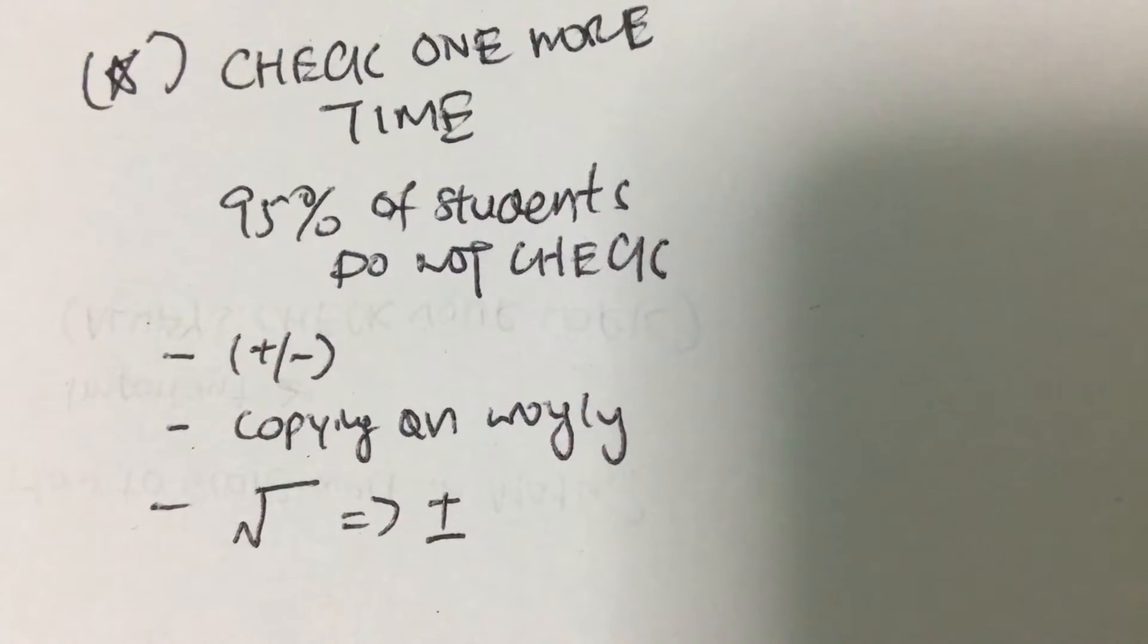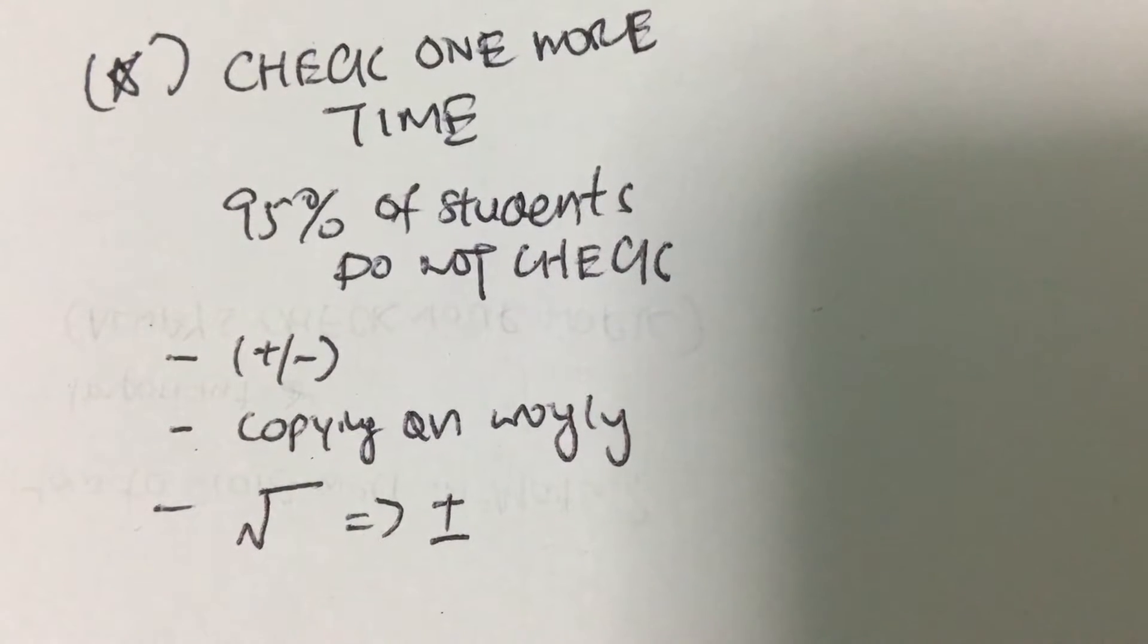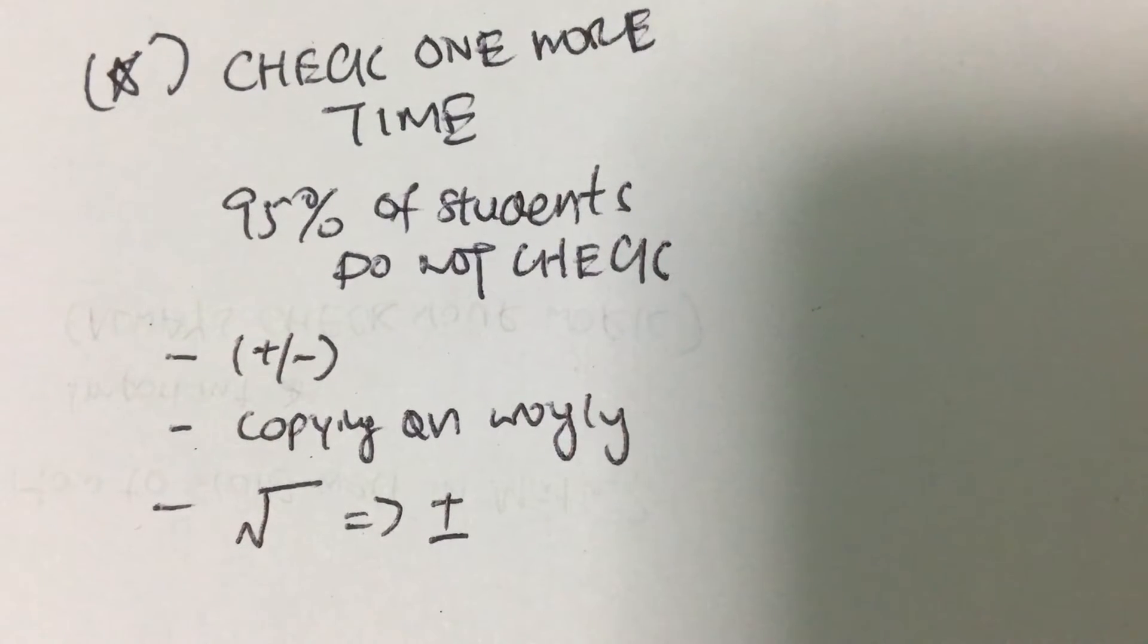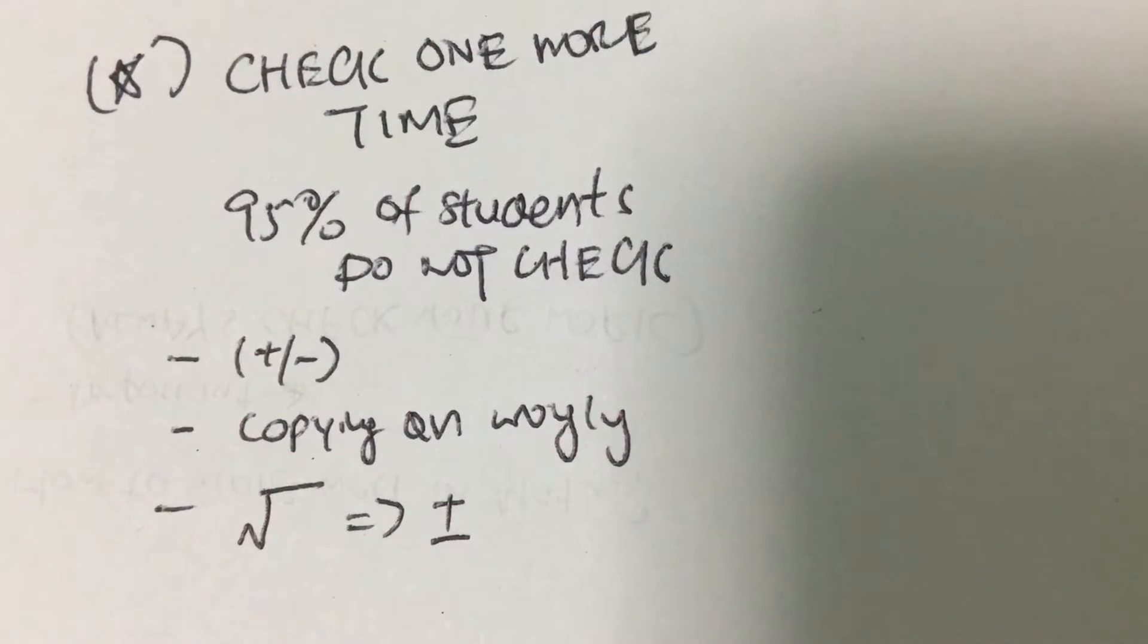Always remember, don't be that 95%. Be that 5% of students who check their work by looking through your solution one more time to look out for errors such as switching of signs, copying questions—make sure you copy correctly—as well as if you do square roots it equals plus-minus, or if you do integration make sure you integrate correctly, and so on.